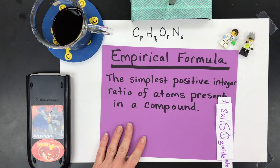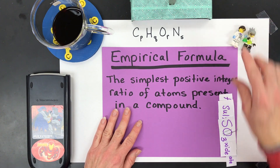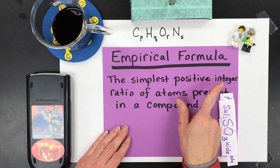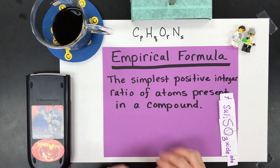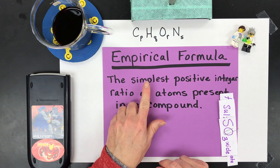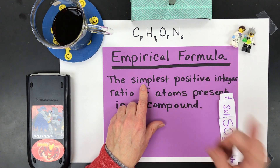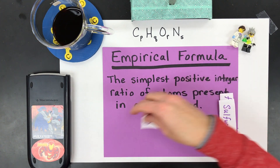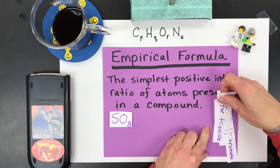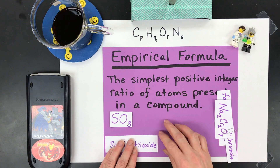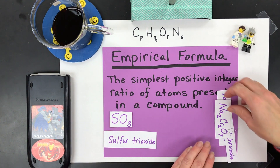We'll start with empirical formula. An empirical formula is the simplest positive integer ratio of atoms present in a compound. You might even see the word 'smallest' there. The key here is there are no decimals. So when you look at a compound like SO3, it's called sulfur trioxide — one sulfur, three oxygens. Beautiful covalent molecule.